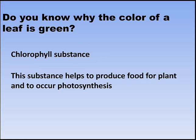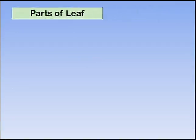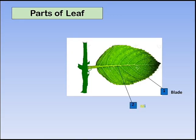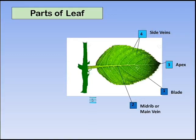Now we will learn the parts of a leaf. Leaves have different shapes and sizes. There are some basic parts: blade, main vein, apex, side veins, petiole, and stomata.